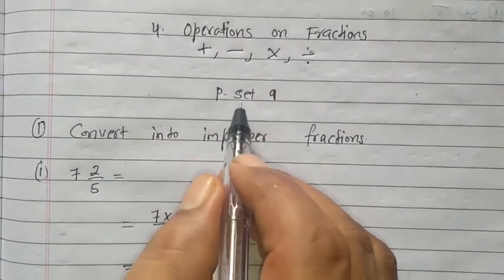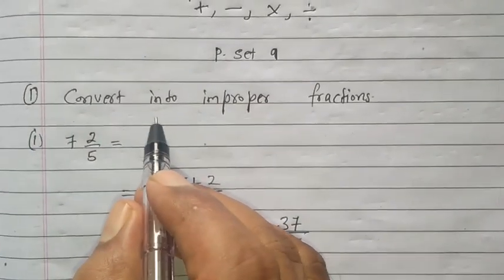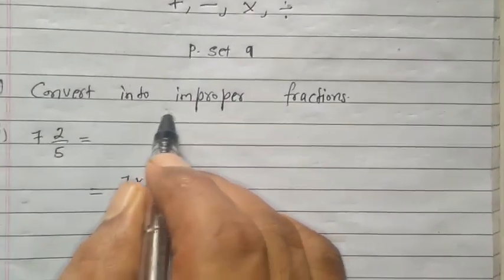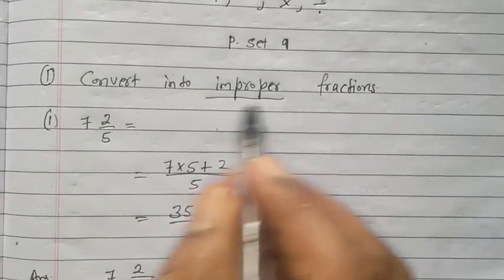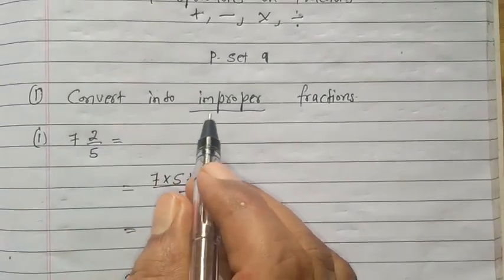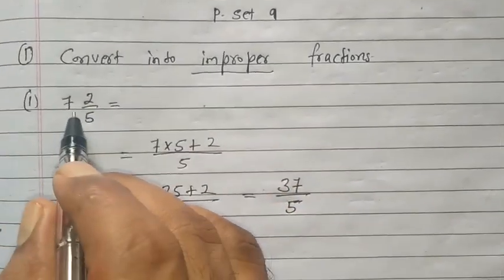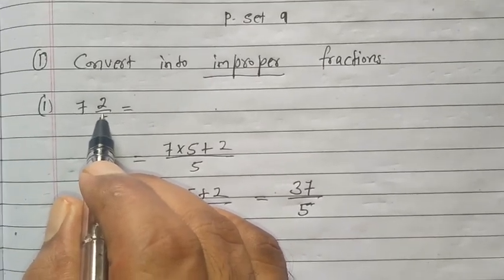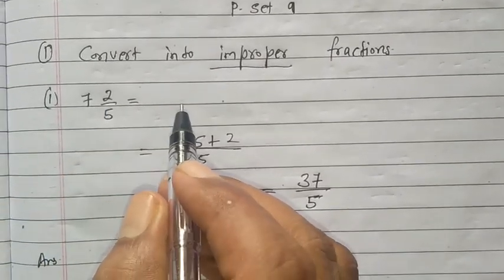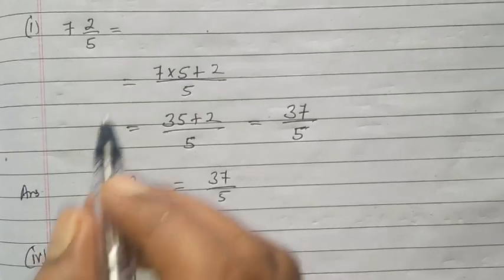Now come to Practice Set Number 9. First, convert into improper fractions. We want to convert into improper fractions. This one is given in mixed fraction. We want to convert to improper fraction. What to do?